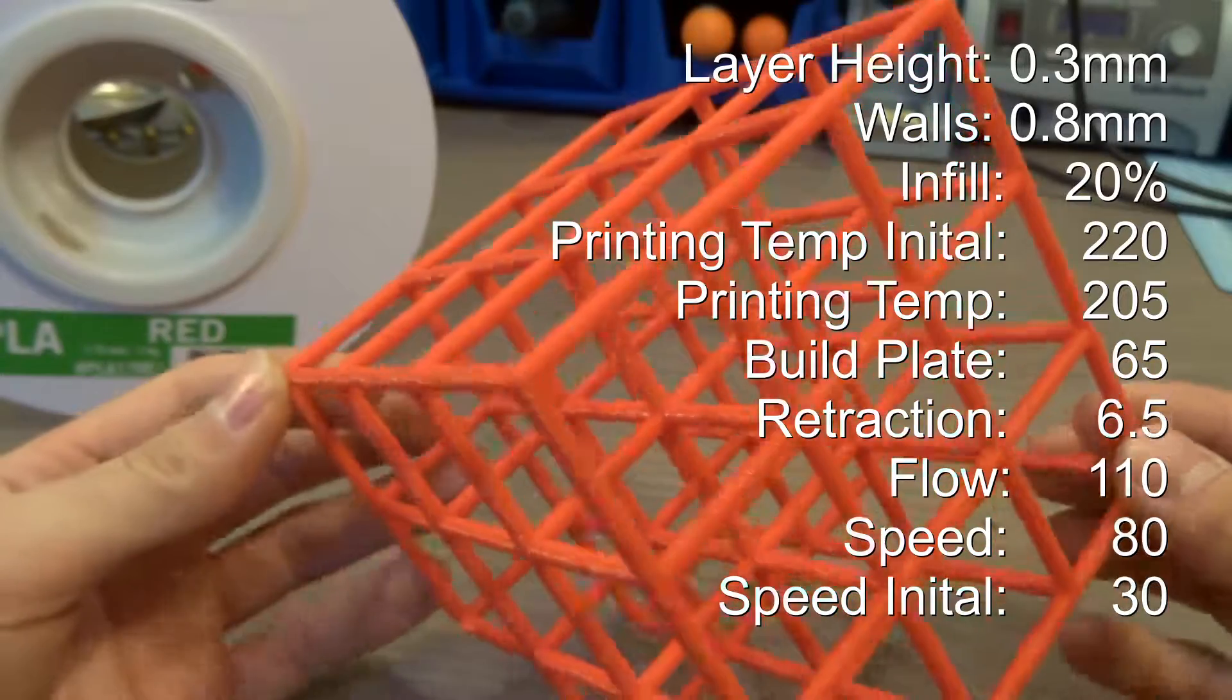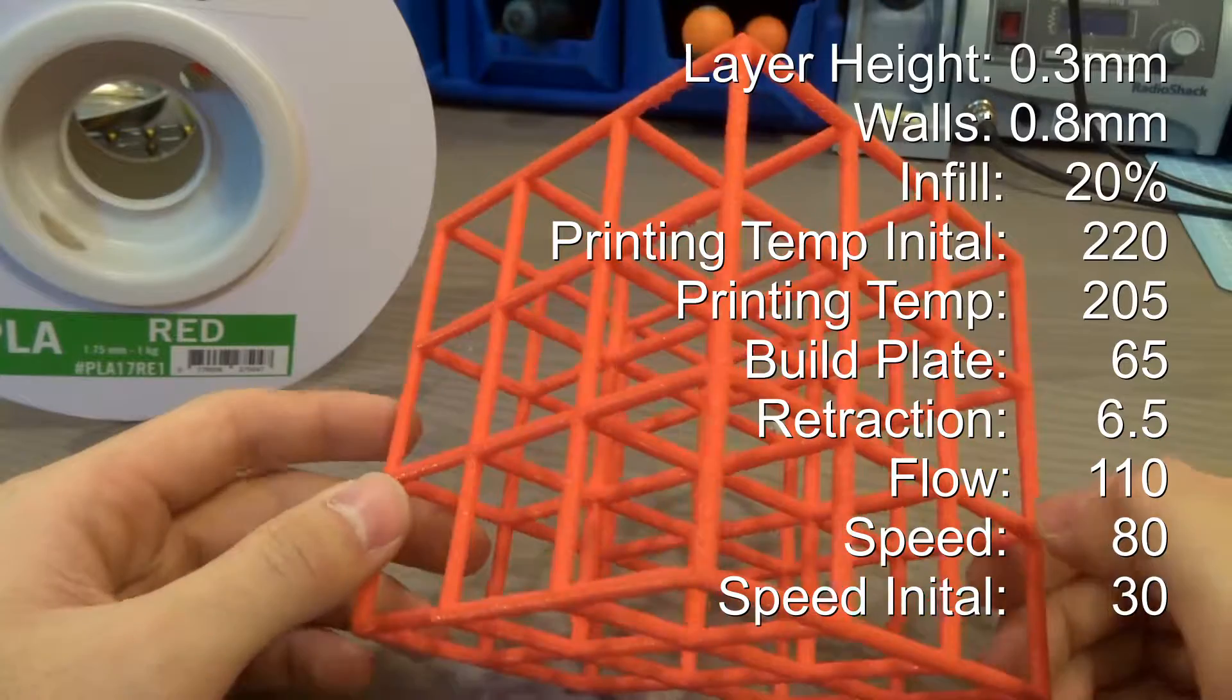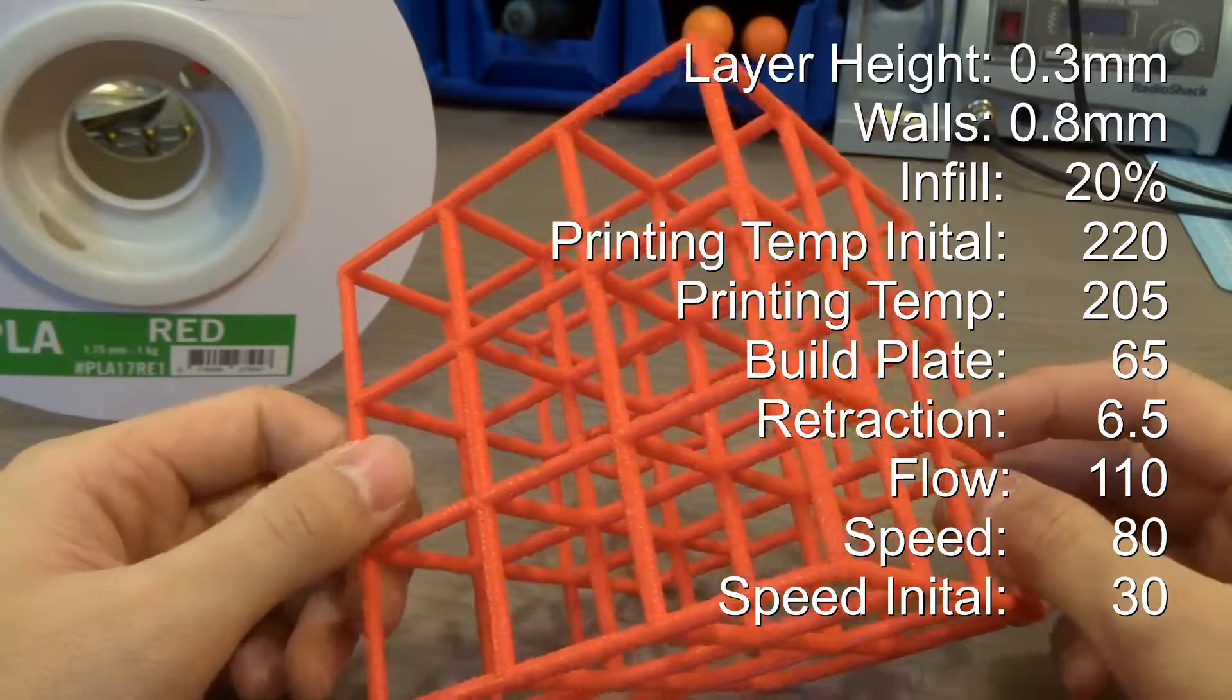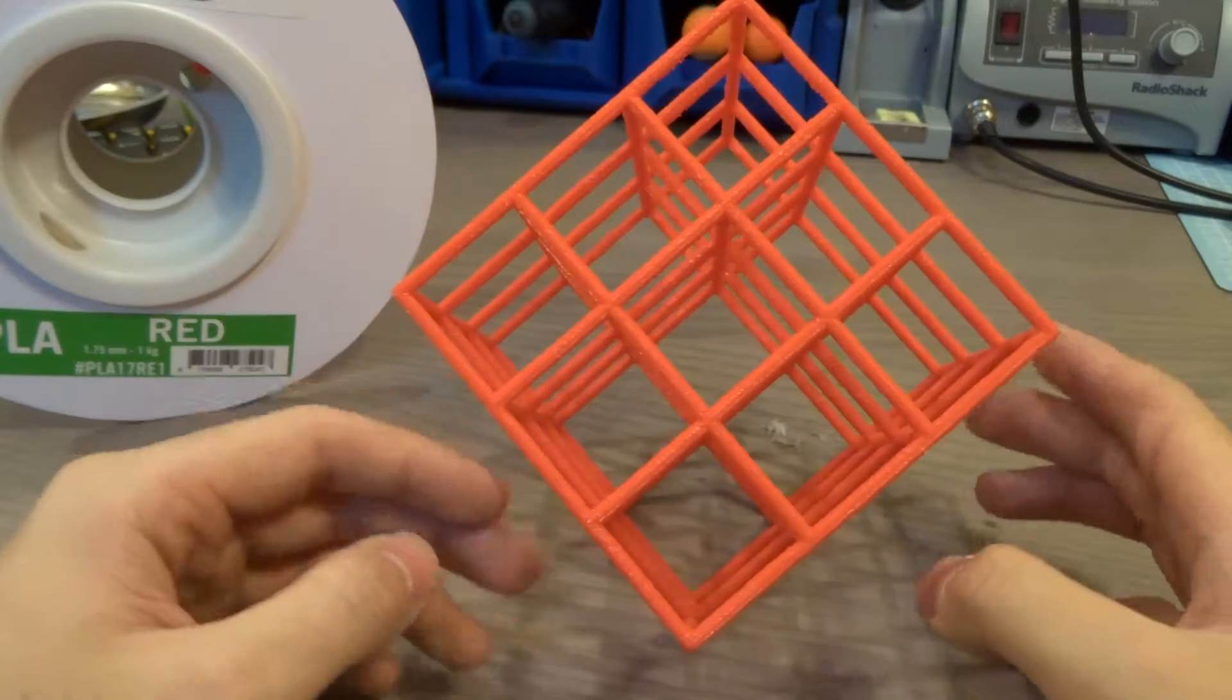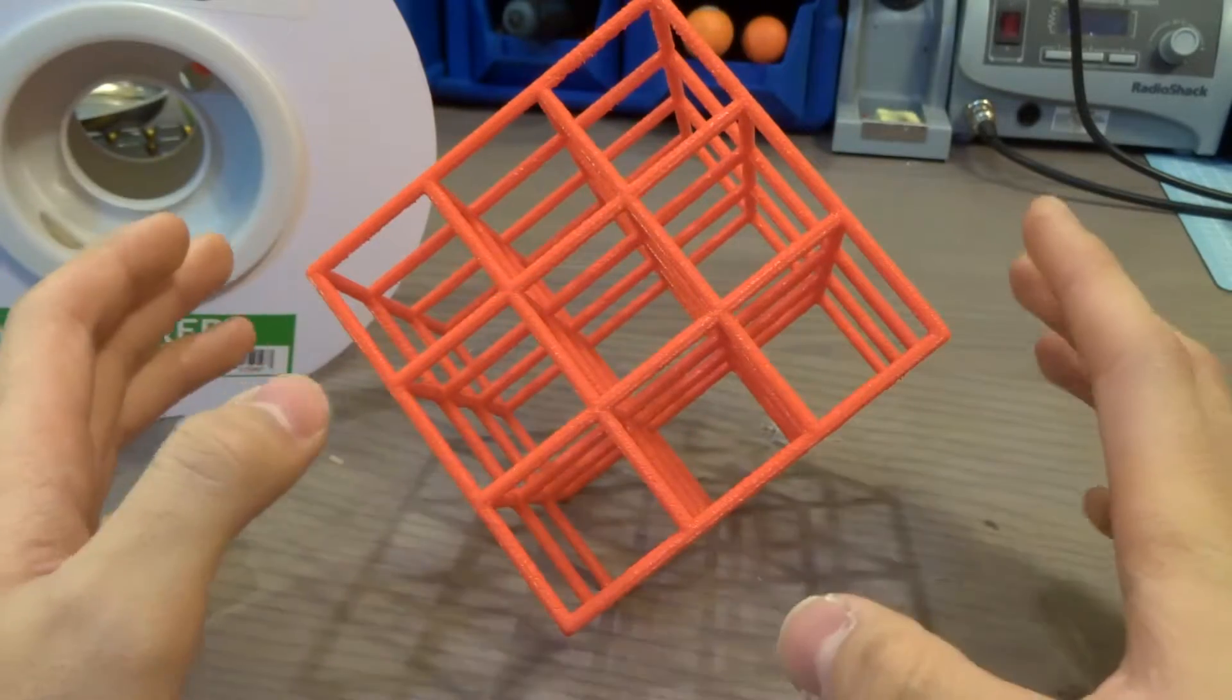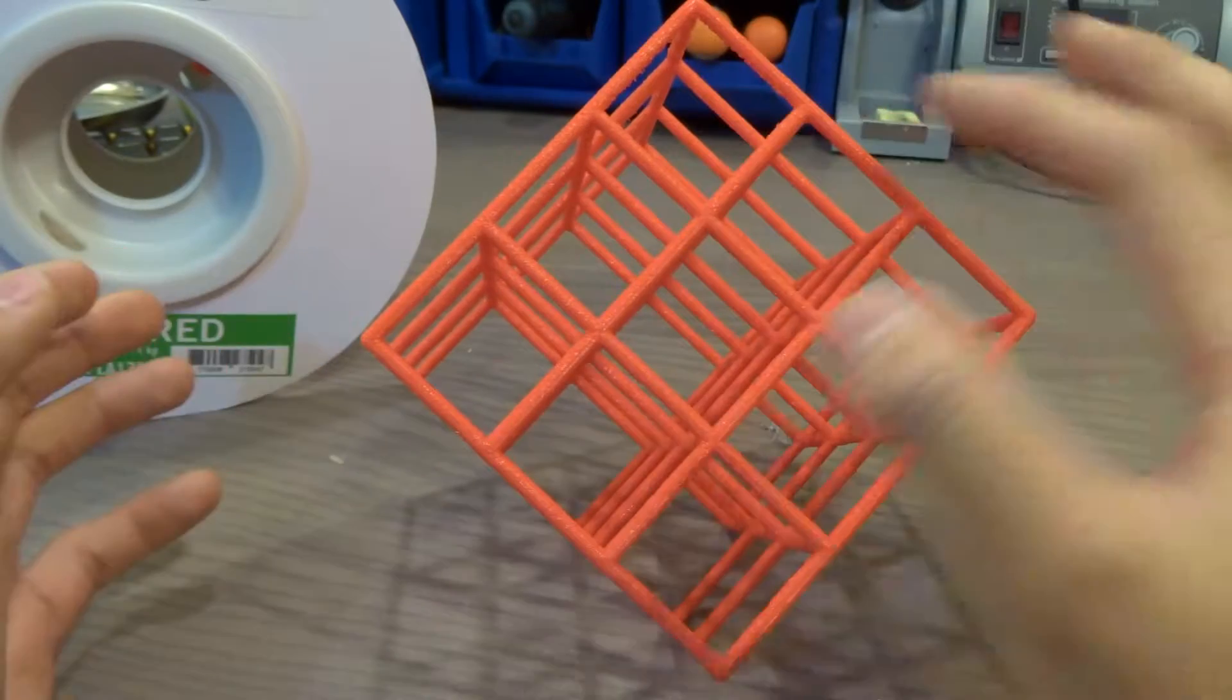As for printing speed, it was set to 80 millimeters per second. For the initial layer print, it was only set to 30 millimeters per second. Do keep in mind that each print is different. If I was printing a vase, I wouldn't use these settings. For example, if you know you'd be printing a lot of overhangs, you want a colder temperature versus a higher temperature. This is so the filament doesn't sag when you print.